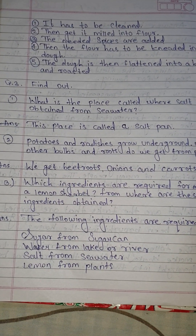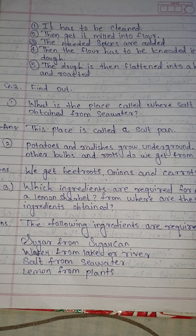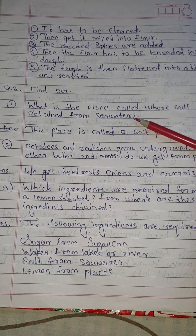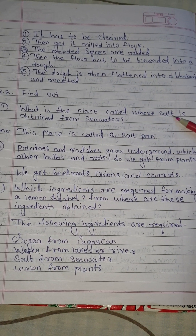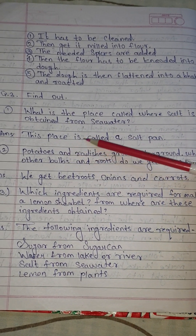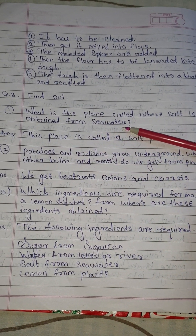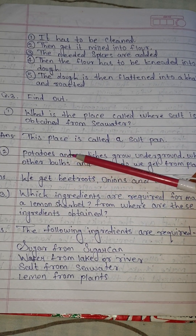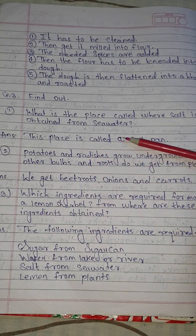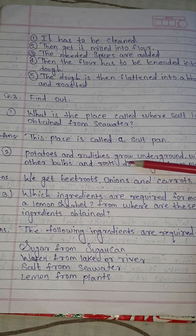Question number 3: find out. Number 1: what is the place called where salt is obtained from seawater? Answer: this place is called a salt pan.